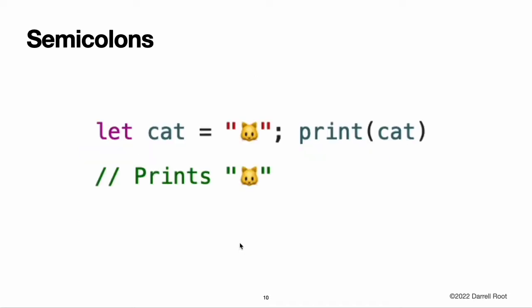Semicolons. Unlike many other languages, Swift does not require you to write a semicolon after each statement in your code, although you can do so if you wish. However, semicolons are required if you want to write multiple separate statements on a single line.